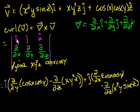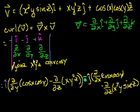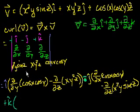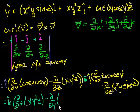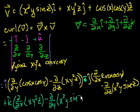When you take the determinant, you use this checkered plus-minus pattern: plus here, minus here, plus here. So it's plus i, minus j — don't want to make that mistake — minus j. This is just the algorithm for taking a determinant. And then finally we have plus k times the determinant of its submatrix: the partial with respect to x of xy squared z, minus the partial with respect to y of x squared y sine z.